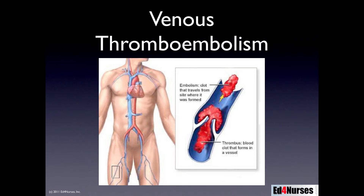Venous thromboembolism occurs in the vein, and one of the things that leads to the potential for a clot is the presence of valves in the veins. We're talking about a venous clot, not an arterial clot. Most of the time when we think about blood clots, we think about decreased perfusion — but we're not going to get decreased perfusion with a VTE. Arterial blood flow continues; it's venous blood flow that is blocked. So instead, what we might see is redness and swelling.